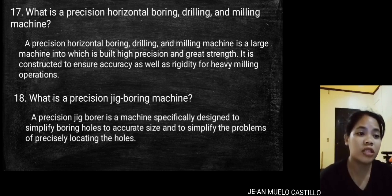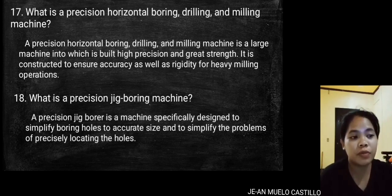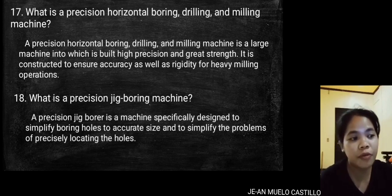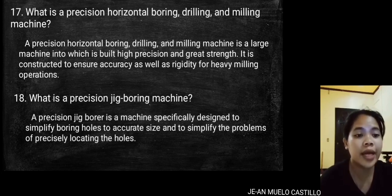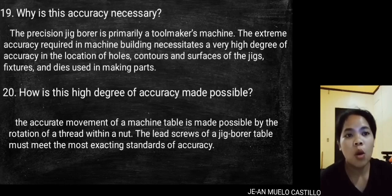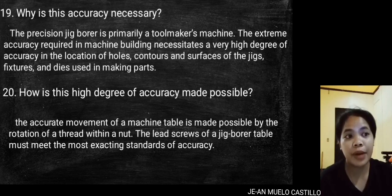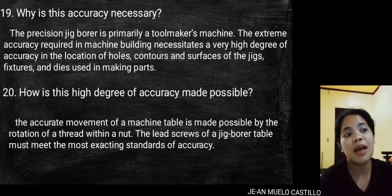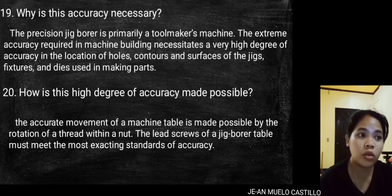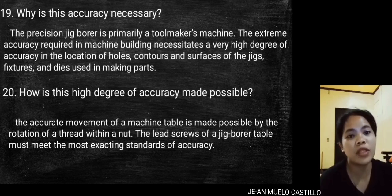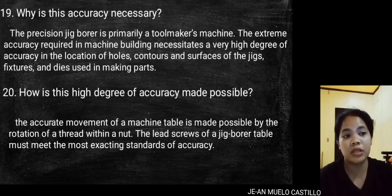What is a precision jig boring machine? A precision jig borer is a machine specifically designed to simplify boring holes to accurate size and to precisely locate holes. It is primarily a toolmaker's machine. The extreme accuracy required in machine building necessitates a very high degree of accuracy in the location of holes, contours, and surfaces of the jigs, fixtures, and dies used in making parts.